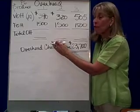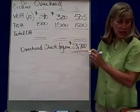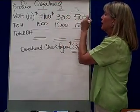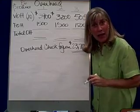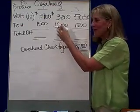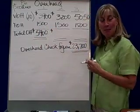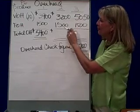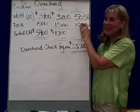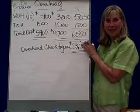My total overhead budgeted for the first quarter will be $3,900 plus $1,500 — I caught a zero problem there — which gives a total of $5,400. In the second quarter, $3,200 plus $1,500 is $4,700. And in the third quarter, $5,050 plus $1,500 is $6,550.